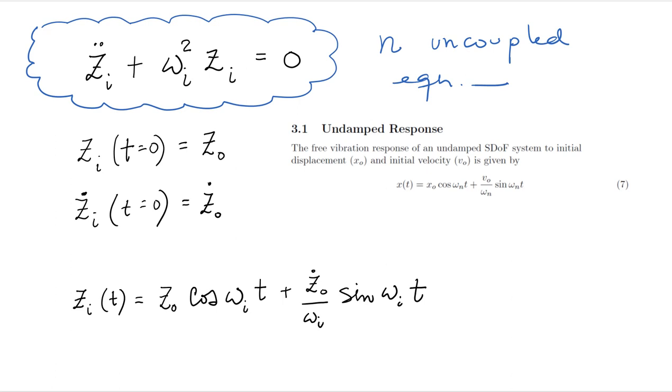So we have n uncoupled equations, which are all like single degrees of freedom. And we've already covered in class, what is the response of a single degree of freedom to an initial condition? This is in 3.1 of your summary.